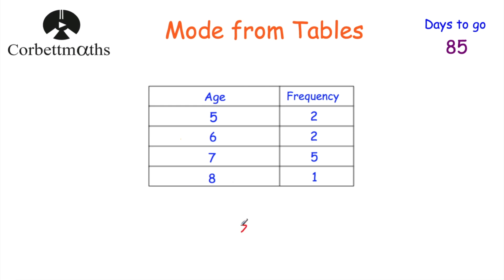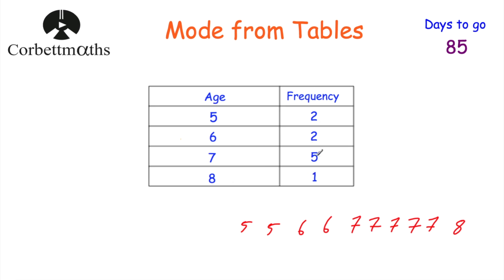If you wanted to, you could write all the values down — two fives, two sixes, five sevens, and one eight — but that's slow when frequencies are large numbers like 150 or 470. So we need a quicker way. To find the mode from a frequency table, we just look for the value with the highest frequency. The highest frequency here is five, so the mode is seven — the modal age is seven years old.